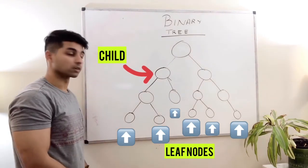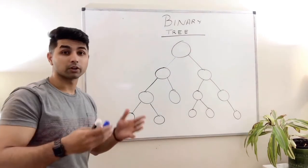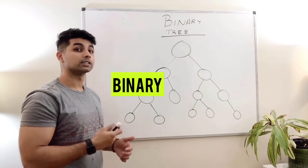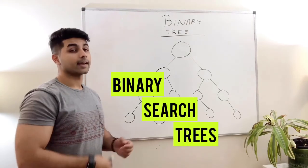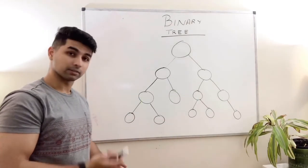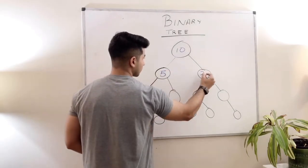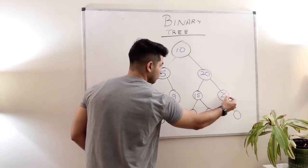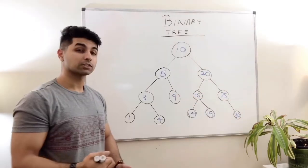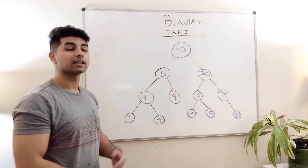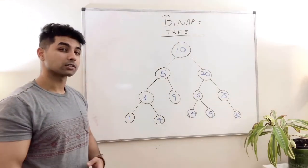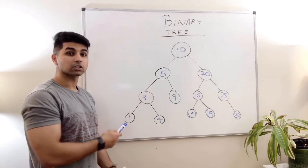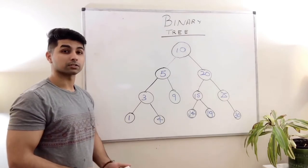The only thing left to know is what a leaf node is. Nodes with no children are called leaf nodes — for example, this node is a leaf node because it has no more children. When we refer to binary trees we very often talk about binary search trees, so let's go about understanding what a binary search tree is.